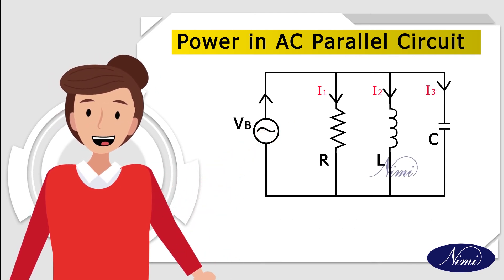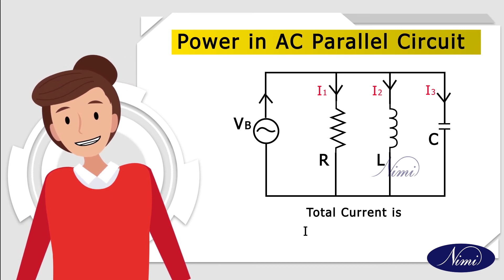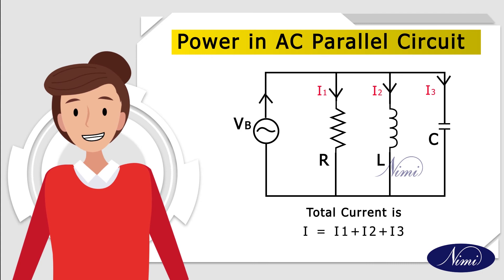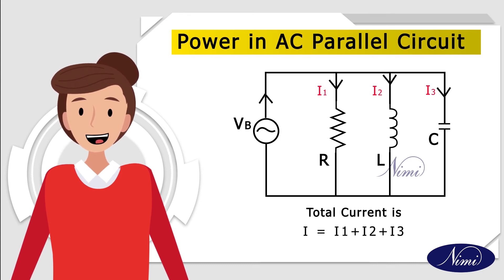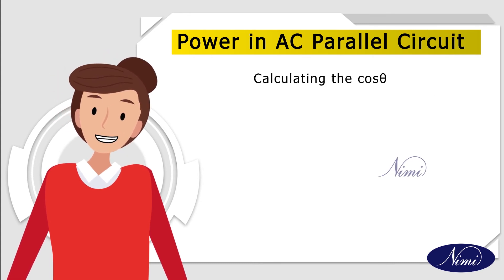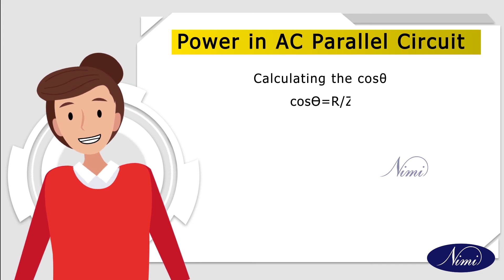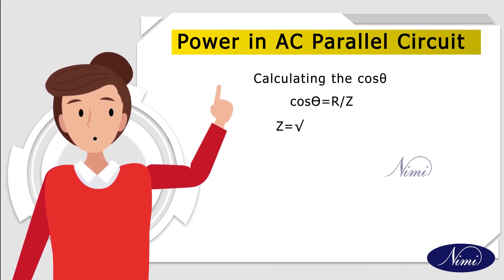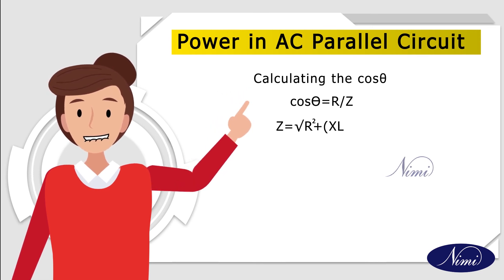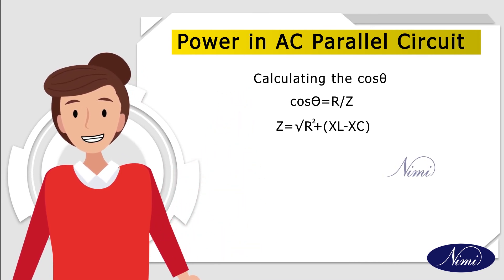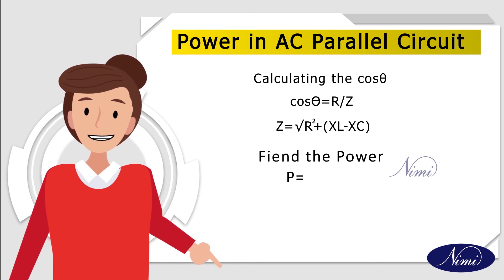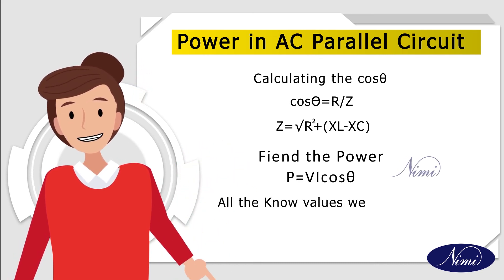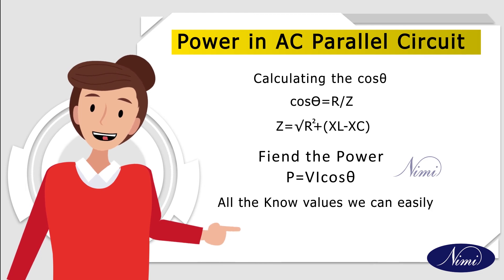The total current I equals I1 plus I2 plus I3. Then we calculate cos theta, which equals R divided by Z, where Z equals the square root of R² plus (X_L minus X_C)². Power P equals V·I·cos theta, and with all known values, we can easily calculate the power.